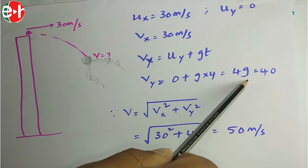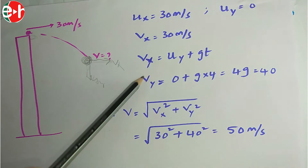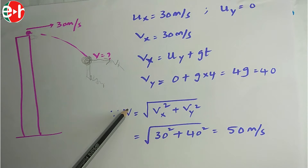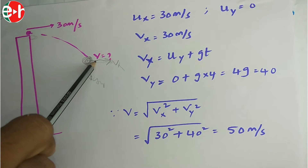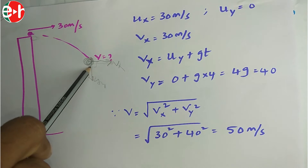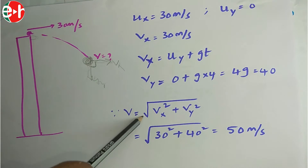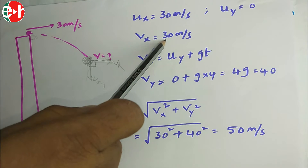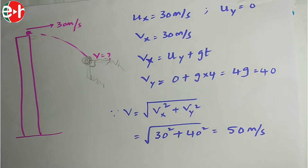The resultant velocity V = √(Vx² + Vy²), since Vx and Vy are perpendicular. V = √(30² + 40²) = √(900 + 1600) = √2500 = 50 meters per second.